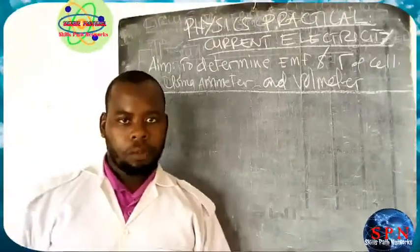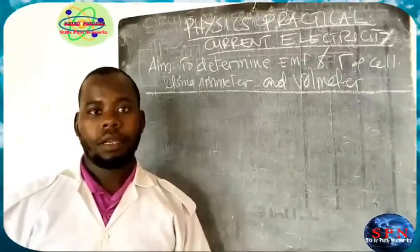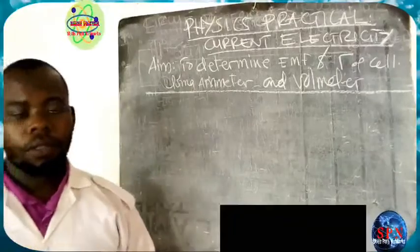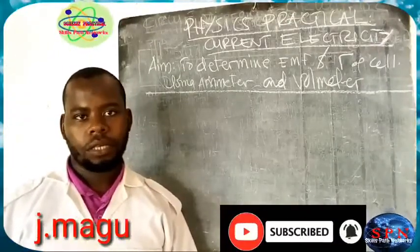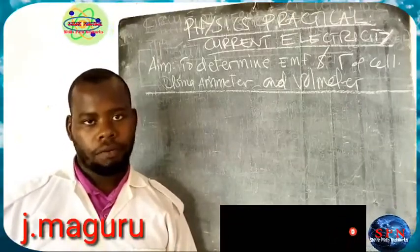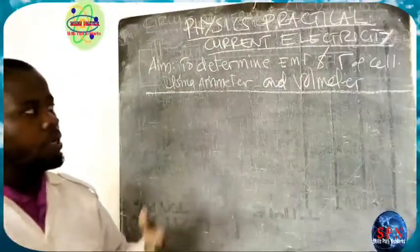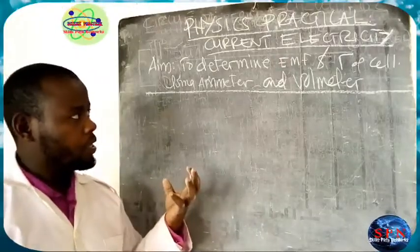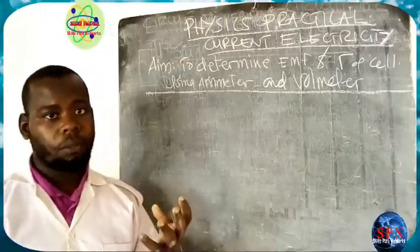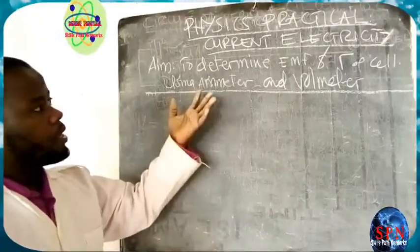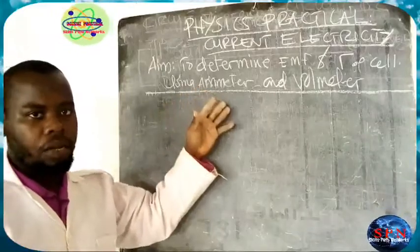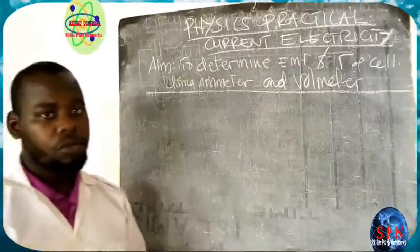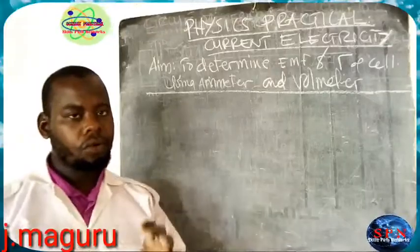Welcome to our physics practical session. Today in current electricity topic, which is among the topical of the practical performed within a nation at O-level or A-level. In a previous lesson we talked about finding the EMF and internal resistance using only an ammeter. For today we are going to use an ammeter and a voltmeter.